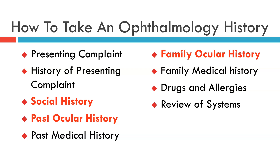In summary, you should take a history of the presenting complaint, remembering to distinguish visual problems from problems of discomfort or appearance. The social history should be given extra weight in an eye history, and you should include both the past ocular history and the family ocular history before taking the past medical history and family medical history.